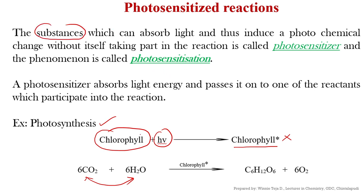Chlorophyll absorbs light and induces the photochemical reaction, but does not participate in photosynthesis. It just acts as a photosensitizer — it sensitizes the reaction but does not participate in it. Such reactions are called photosensitization reactions. The photosensitizer absorbs light energy and passes it on to one of the reactants which participates in the reaction.